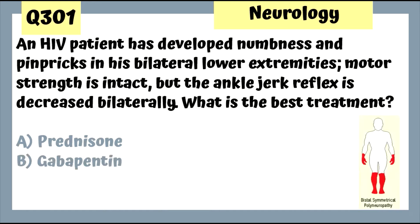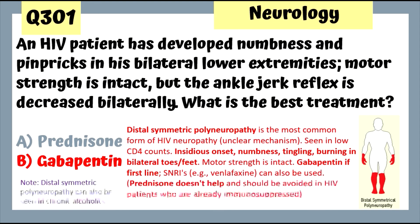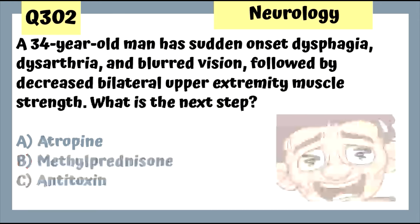Question 301: An HIV patient with non-painful paresthesias in bilateral lower extremities; motor strength intact but ankle jerk reflexes decreased bilaterally — this is distal symmetric polyneuropathy in HIV patients. Best treatment is gabapentin.